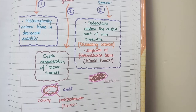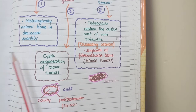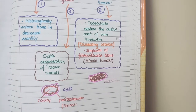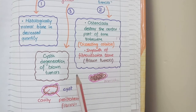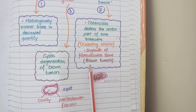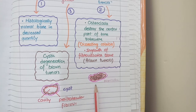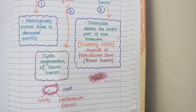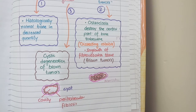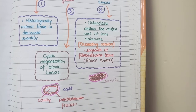To revise all three microscopic abnormalities caused by hyperparathyroidism on bones: first, osteoporosis, in which there is histologically normal bone just decreased in quantity. Second, brown tumors, where osteoclasts destroy the central part of bony trabecula causing dissecting osteitis, followed by ingrowth of fibrovascular tissue appearing as brown masses. Lastly, these brown tumors undergo cystic degeneration resulting in osteitis fibrosa cystica.